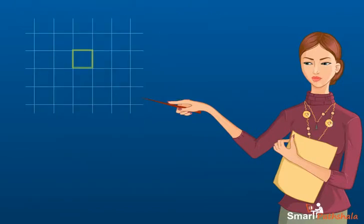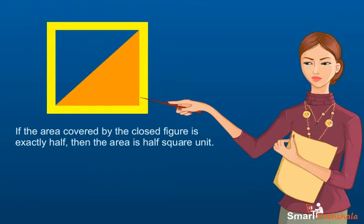We use the following convention to calculate the area of irregular shapes. 1. If the area covered by the closed figure is exactly half, then the area is half square unit.